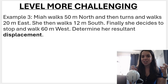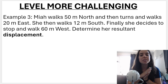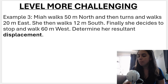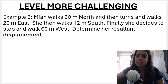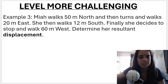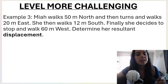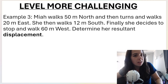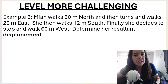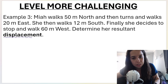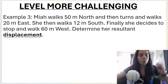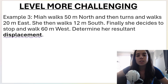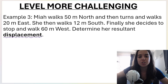Level: more challenging. We've got a person — this person's name is Mia — and according to the question, Mia walks north, then east, then south, and then she finally decides to stop and walk west. Determine her resultant displacement. I hope you remember from grade 10 that displacement is a vector — it's from the starting position to the final position.